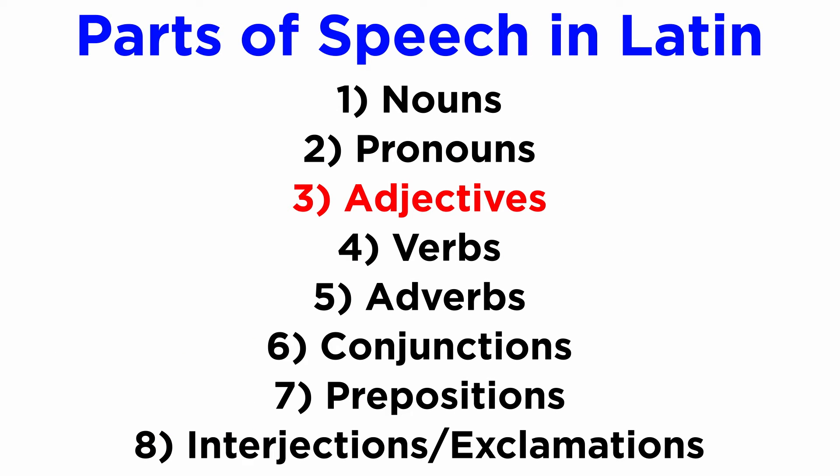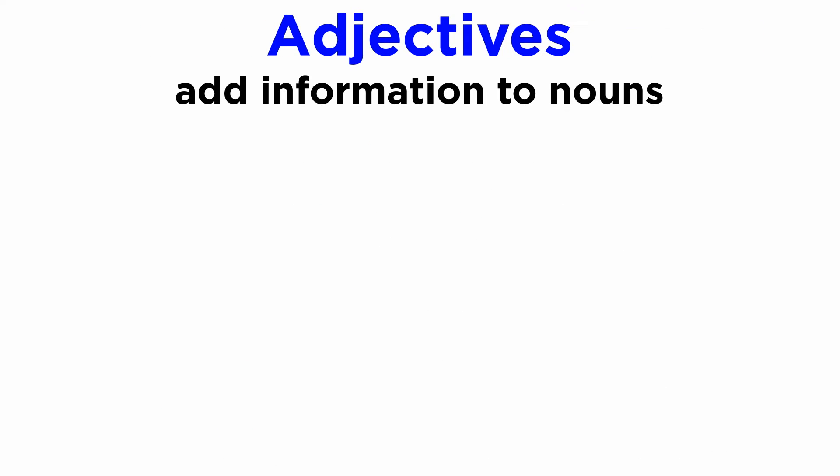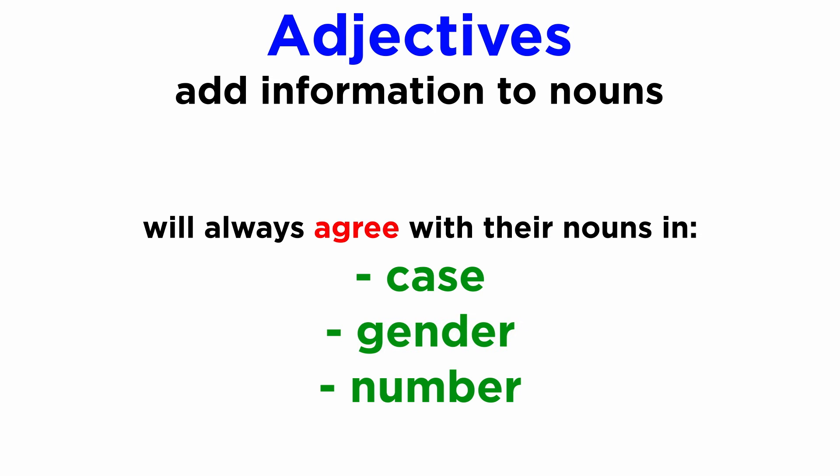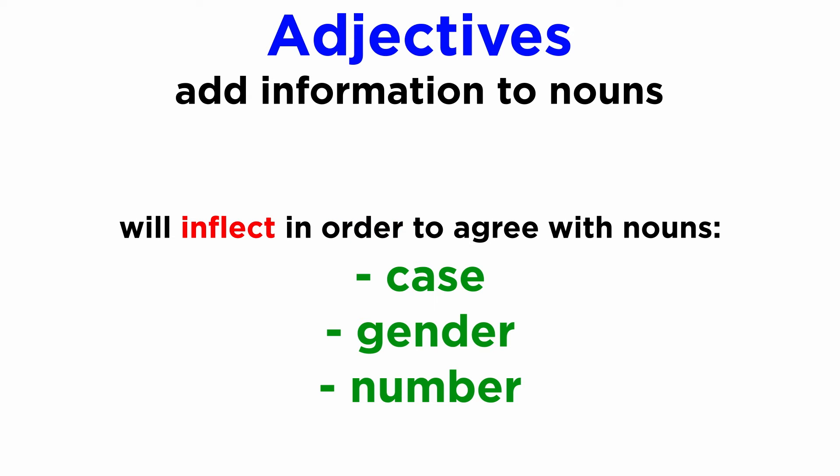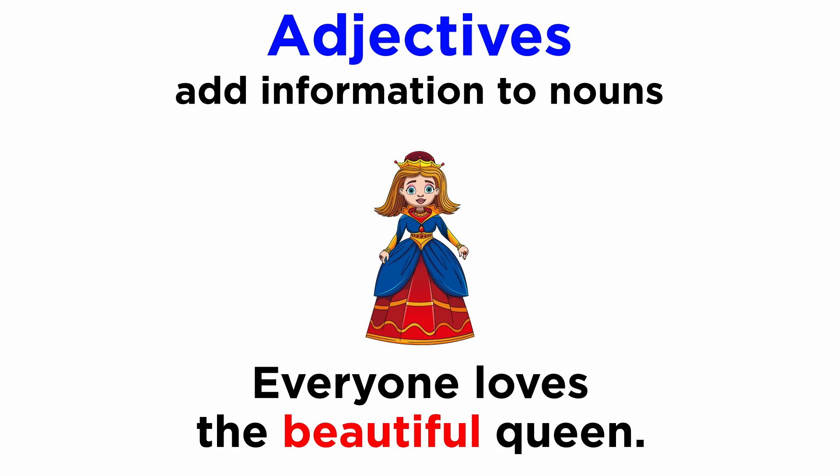Next, we have adjectives. These are words which add information to a specific noun and will always agree with the noun they modify in case, gender, and number. Adjectives are inflected words in Latin. In English, an example would be: everyone loves the beautiful queen.